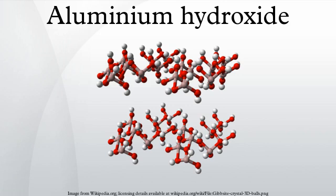Freshly precipitated aluminium hydroxide forms gels, which is the basis for application of aluminium salts as flocculants in water purification. This gel crystallizes with time. Aluminium hydroxide gels can be dehydrated to form an amorphous aluminium hydroxide powder, which is readily soluble in acids.